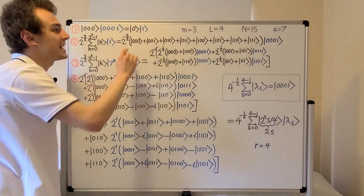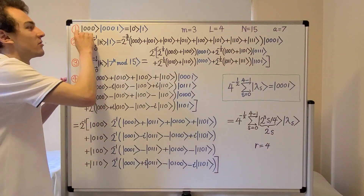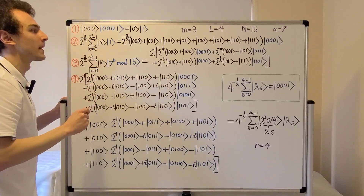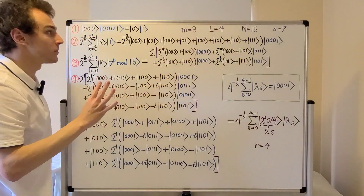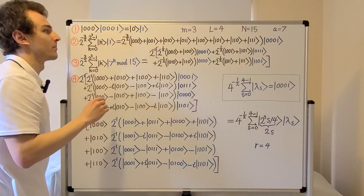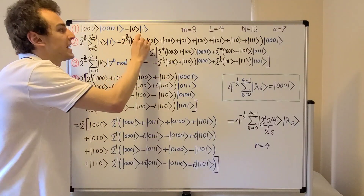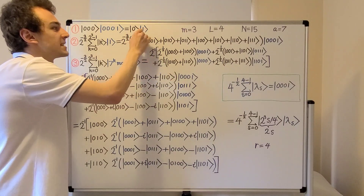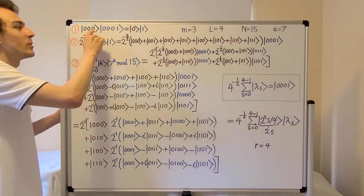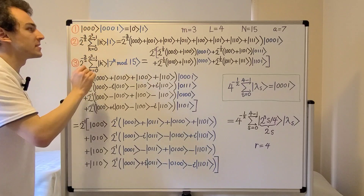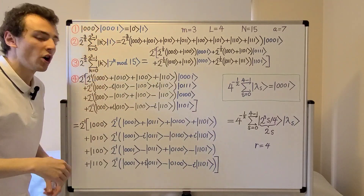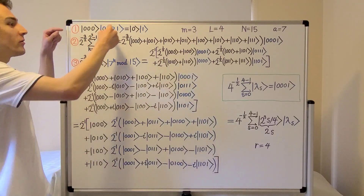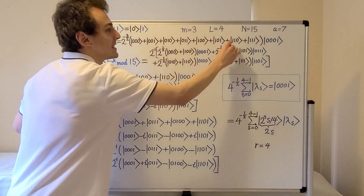Step one, the initialization step, is identical to the previous video. We're initializing the first register of m qubits, which is 3, in the state zero zero zero, and the second register of l qubits, which is 4, is being initialized in the state zero zero zero one. We can write this compactly as ket zero ket one, but we have to be careful with this condensed notation because we're dealing with entire registers of qubits, not individual qubits. The dimension of the Hilbert space of a three qubit system is eight, that is two to the power of three.